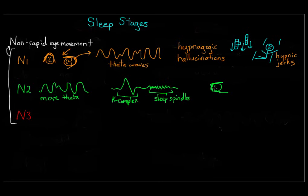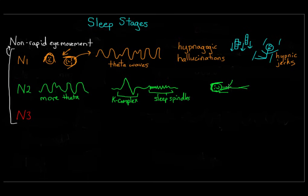Sleep spindles in some parts of the brain are associated with people's ability to sleep through loud noises. K-complexes are a different type of brain activity also thought to suppress cortical arousal and keep you asleep. They're also thought to help with sleep-based memory consolidation — the theory that some memories are transferred into long-term memory during sleep. Interestingly, you can induce k-complexes by gently touching someone in this stage, and the brain assesses the touch as non-threatening and suppresses processing of that stimulus to keep you asleep.